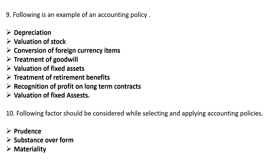To repeat: examples of accounting policy include depreciation, valuation of stock, conversion of foreign currency items, treatment of goodwill, valuation of fixed assets, treatment of retirement benefits, recognition of profit on long-term contracts, and valuation of fixed assets. The following factors should be considered while selecting and applying accounting policy: first is prudence, next is substance over form, and next is materiality.